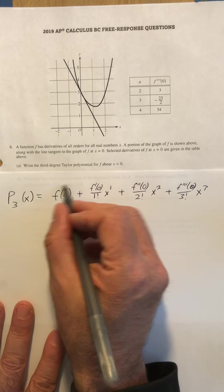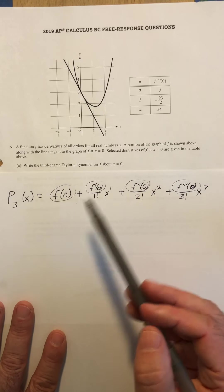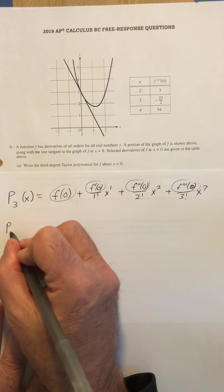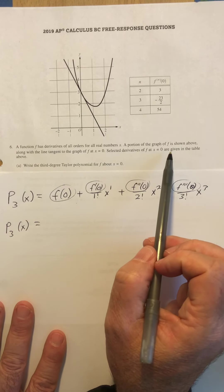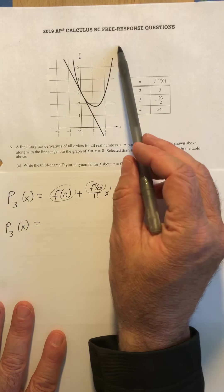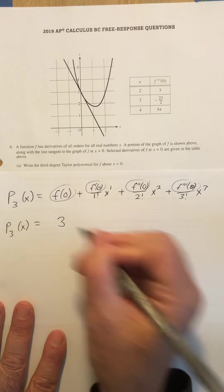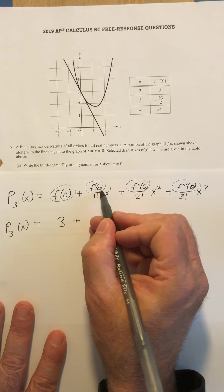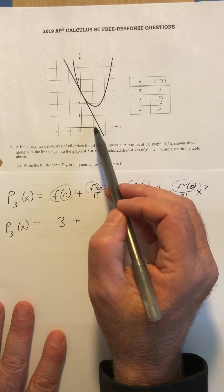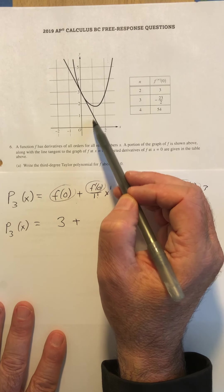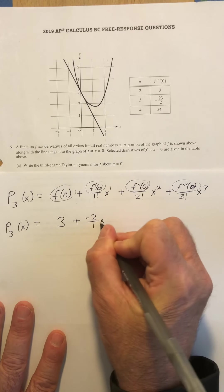What I really want to find in this problem are these values, and they turn out to be either in the table or in the graph depending. So for our third degree Taylor polynomial: the value of f at zero — here's my function f, it's this f along with the tangent line — f of zero is just going to be three. The derivative at zero is the slope at zero, and so if I look at the slope of this tangent line, it looks like I'm going down two over one, so that's a slope of negative two over one times x to the first.